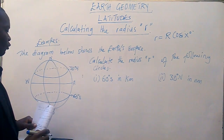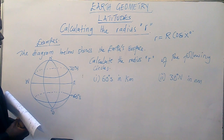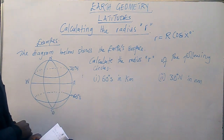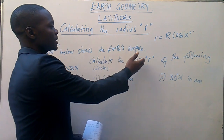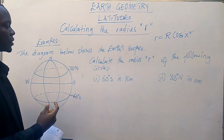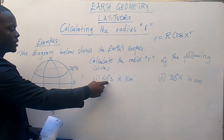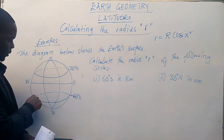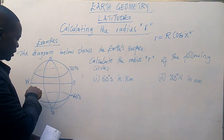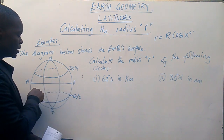So now, we have got this question here, which is saying: the diagram below shows the Earth's surface. The question is saying, calculate the radius r of the following circle. So we want to know the radius of the 60 degrees south circle. Okay, so this is a latitude which is forming a circle here, and we want to find out its radius.